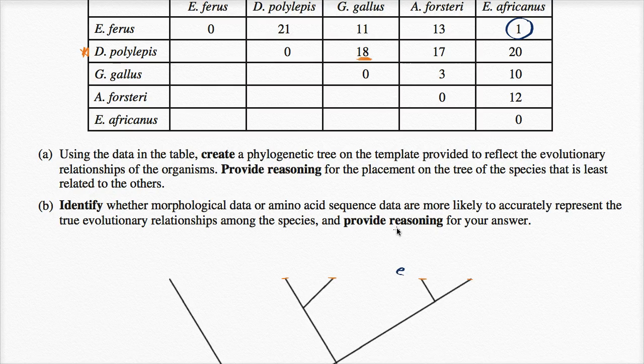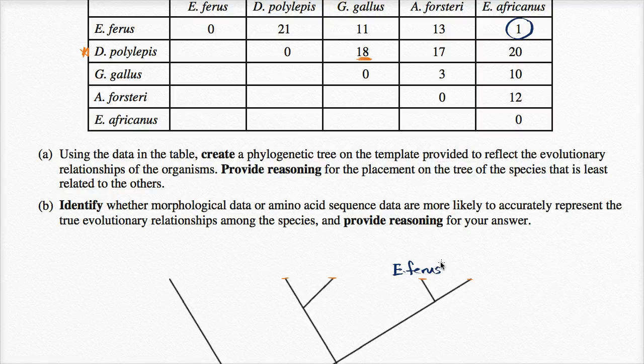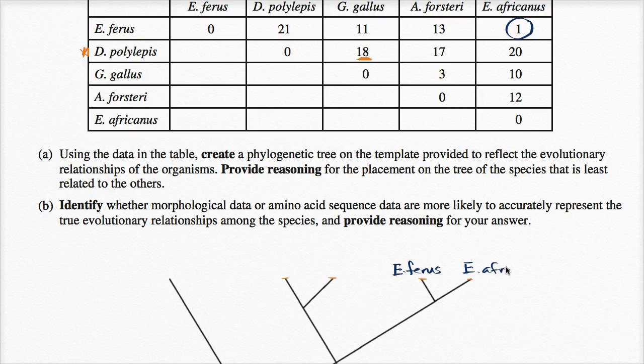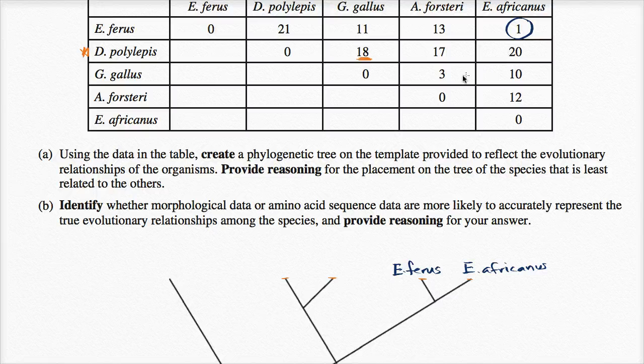E. ferrous and E. africanus. I'd do that there. Now, where else do we see some low numbers? Well, I see this three right over here.